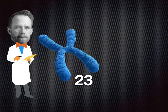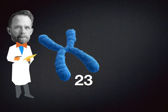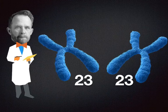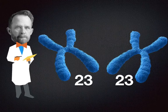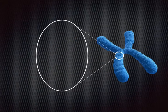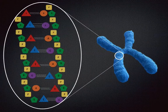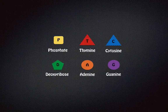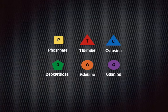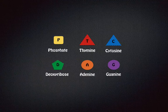Morgan also noticed that chromosomes from one cell to another were usually identical. So he wanted to take a closer look at these chromosomes and see what was in them, and he made a pretty interesting discovery. He identified the six components that DNA was made out of: phosphate, thymine, cytosine, deoxyribose, adenine, and guanine as the main components of DNA.